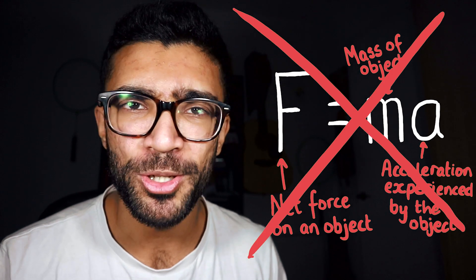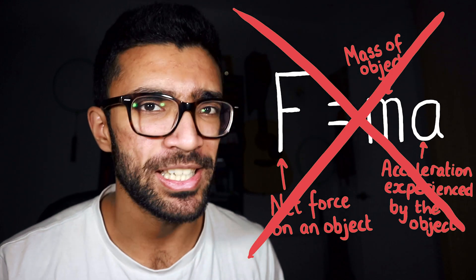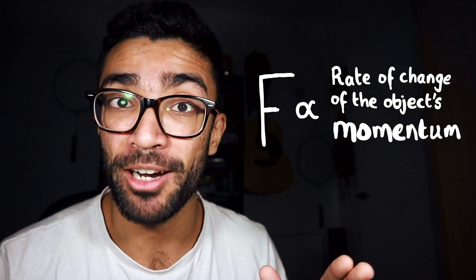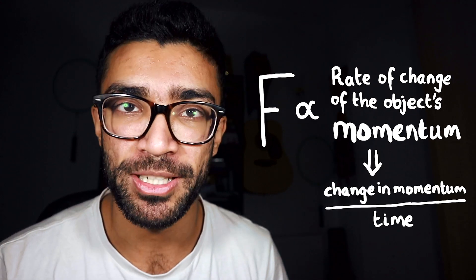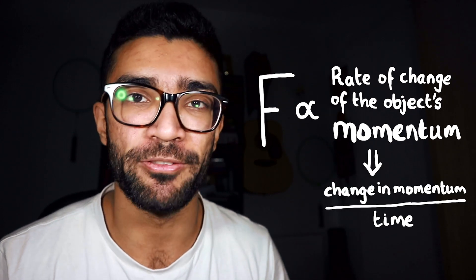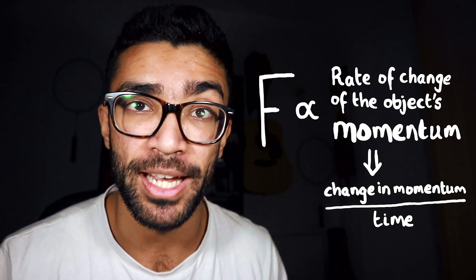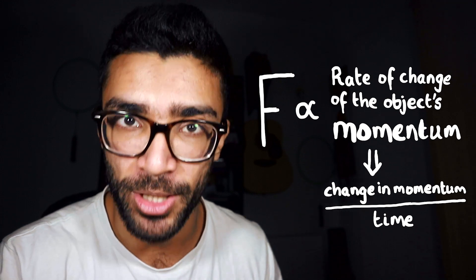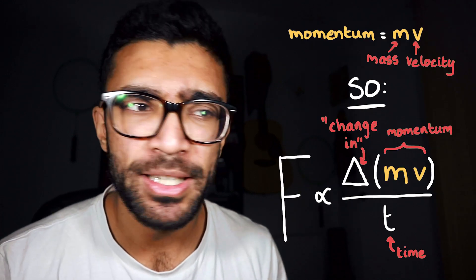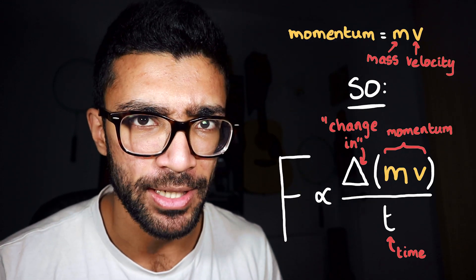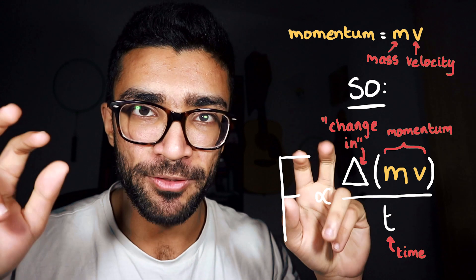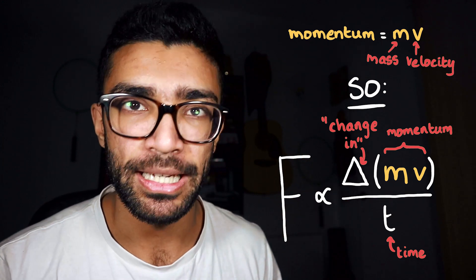Well, that's not quite right. What Newton's second law actually says is that the net force on an object is directly proportional to the rate of change of the object's momentum — the change in momentum of the object divided by the time taken for that change to occur. Momentum is equal to the mass of the object multiplied by the velocity of the object, and we've seen what rate of change means already.